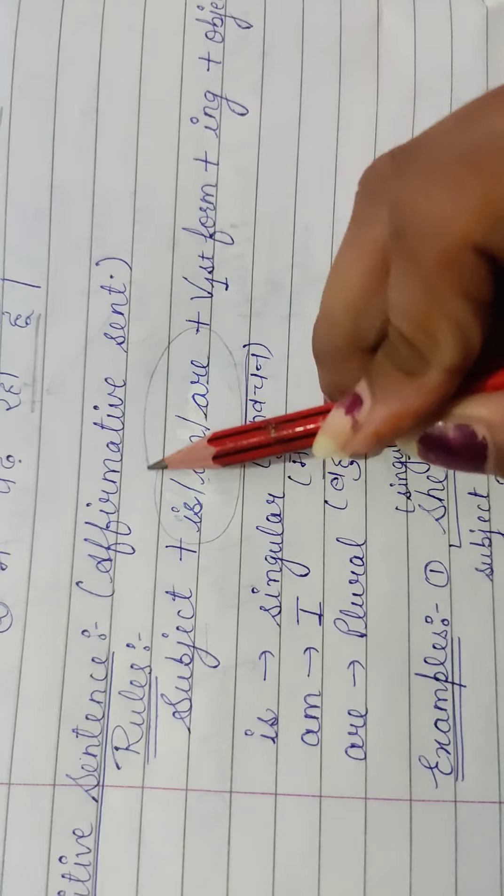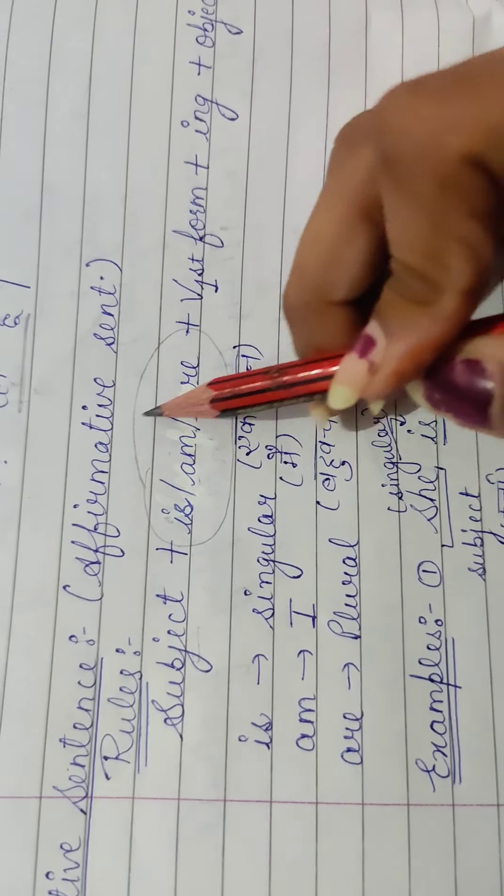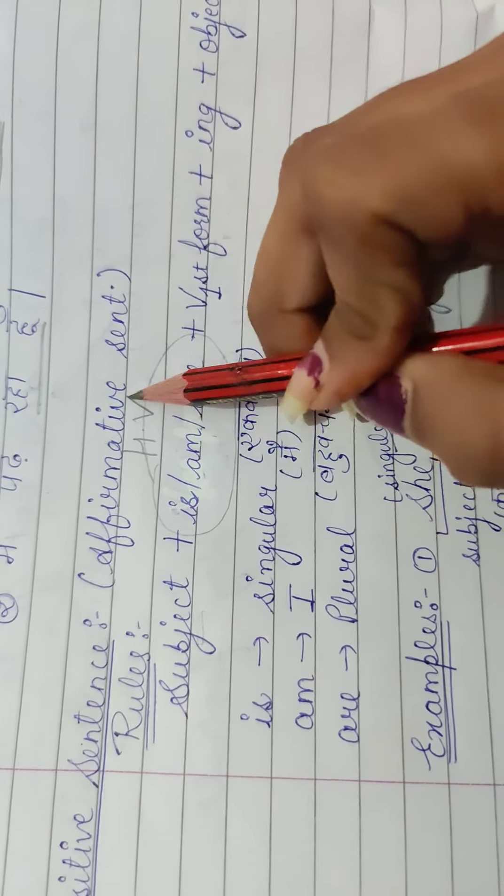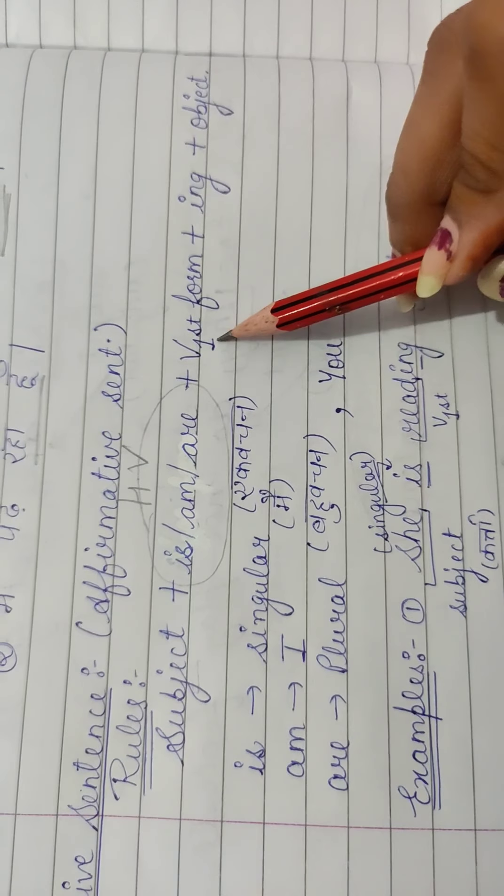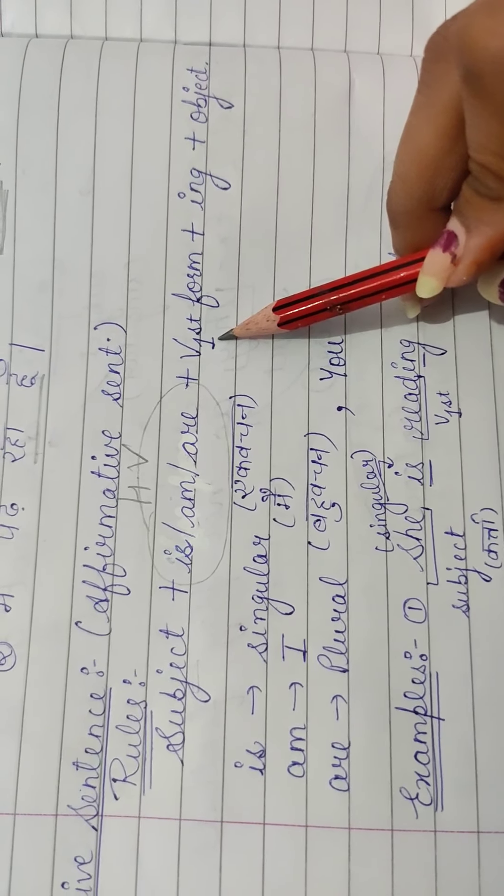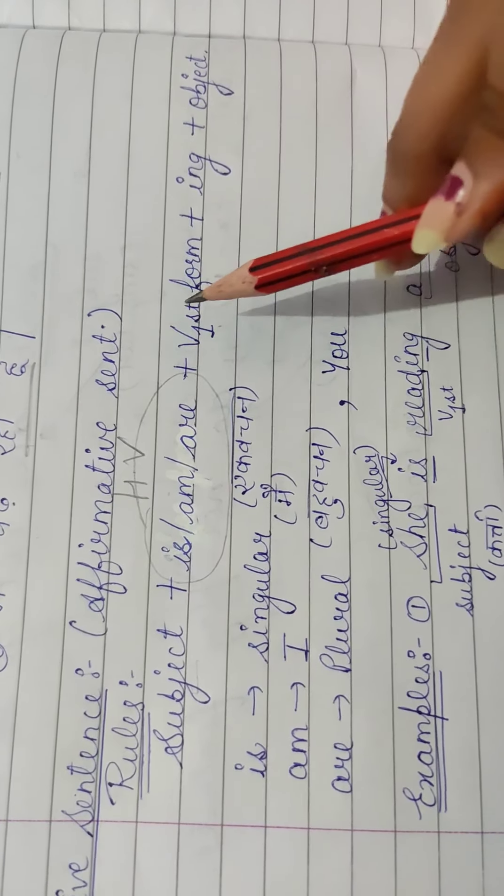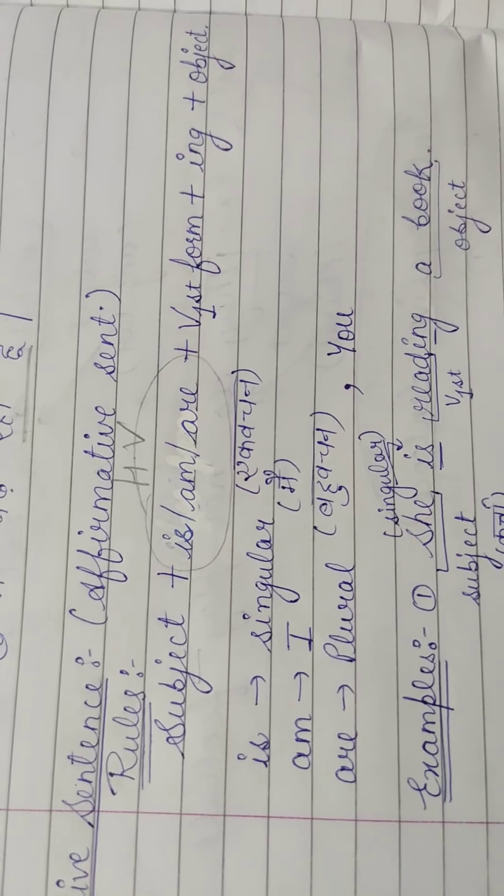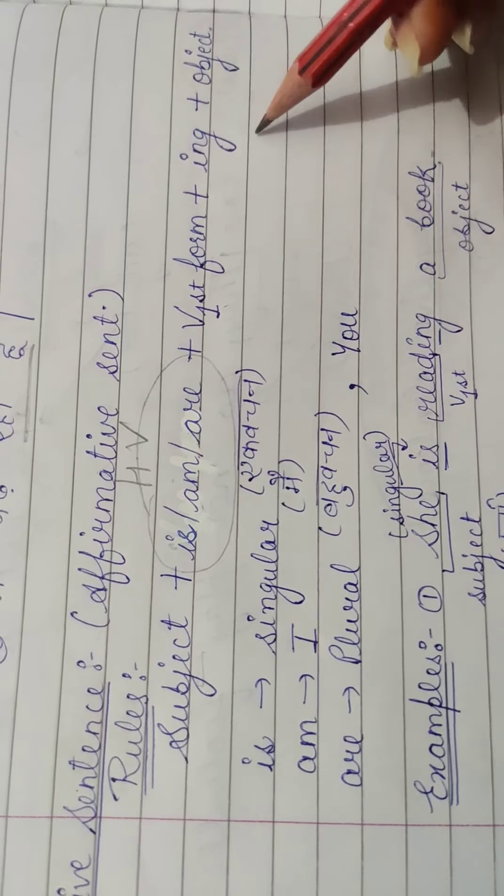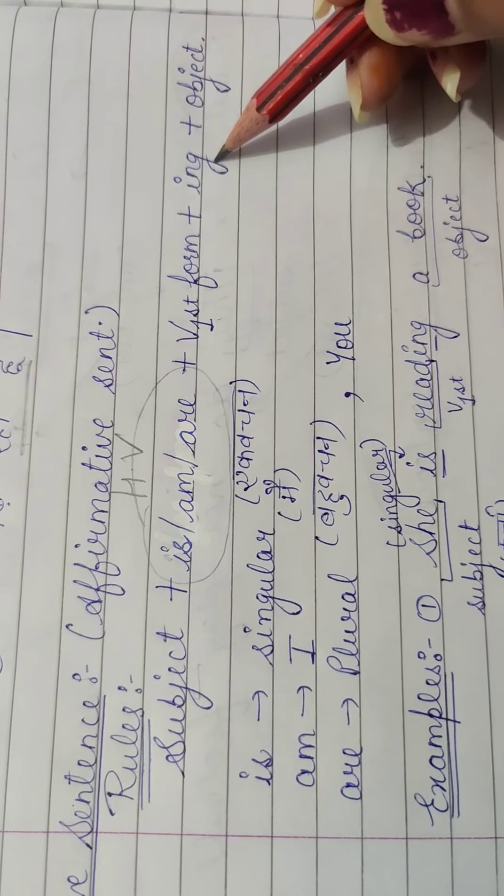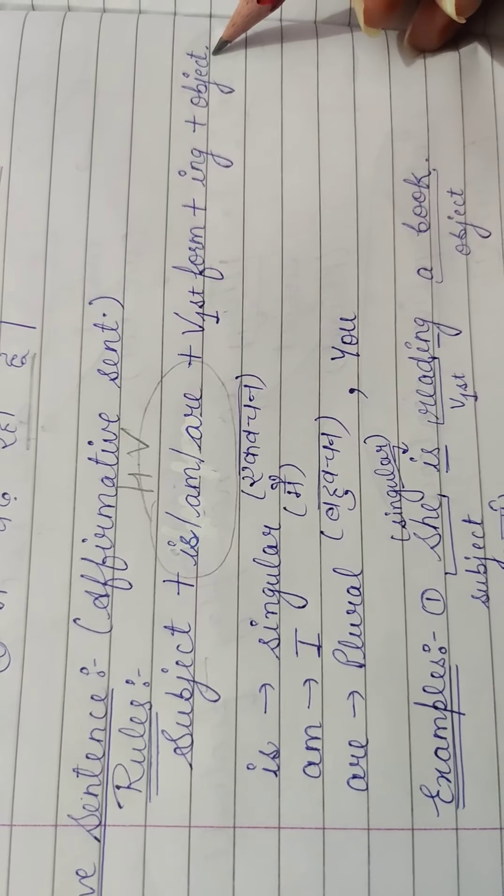Uske saath, hum helping verb use karate hai: is, am, are. Koon si helping verb use hoga yahan pe? Is, am, are. Uske saath, hum lagate hai verb ki first form. Verb kya hoti hai - kriya, kya kaam hua hai. To kriya kya ho gya? Verb. Aur us verb ke saath, hum lagate hai ing, or ing ke baad, hum lagate hai object.